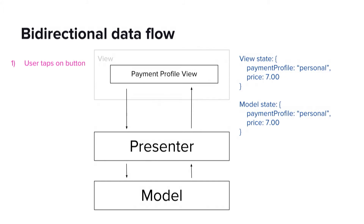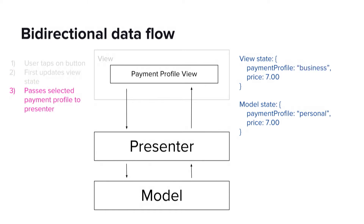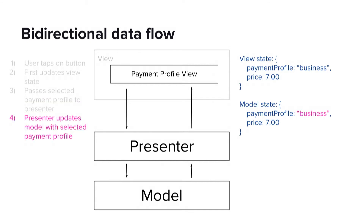Now let's apply our bidirectional data flow to our rate and pay feature. In the view, we have the payment profile. They start out in sync, and both say that the payment profile is personal and the price is $7. We begin with the passenger tapping on the payment profile button. The view state updates from a personal profile to business. We now pass the payment profile through the presenter and to the model. When the model receives this new payment profile, it also updates from personal to business. So far, everything is good — the two states are in sync, we don't have any bugs, and the user experience is smooth.